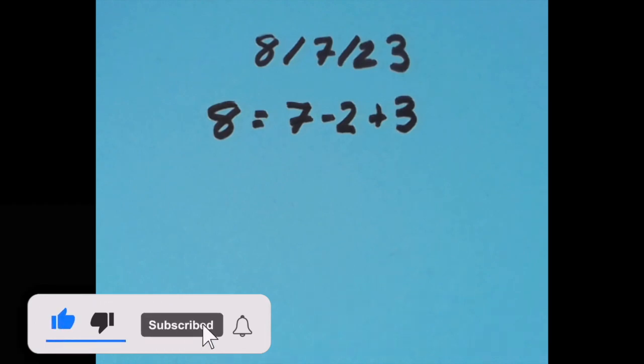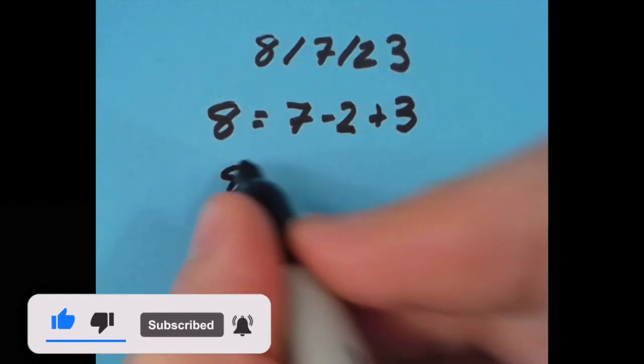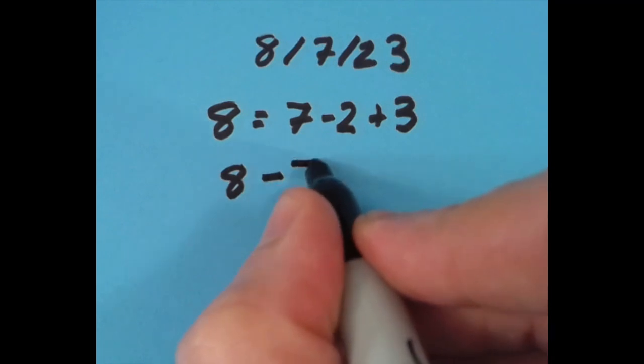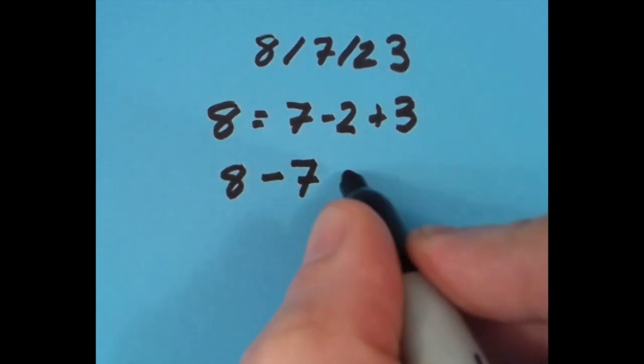So that's what I did, but I did try it with the equal sign in different places. Here with the equal sign over a spot to the right, I said that 8 minus 7 is 1, and so is negative 2 plus 3.